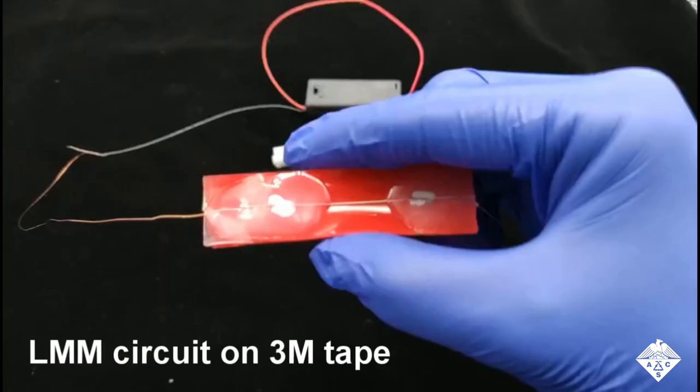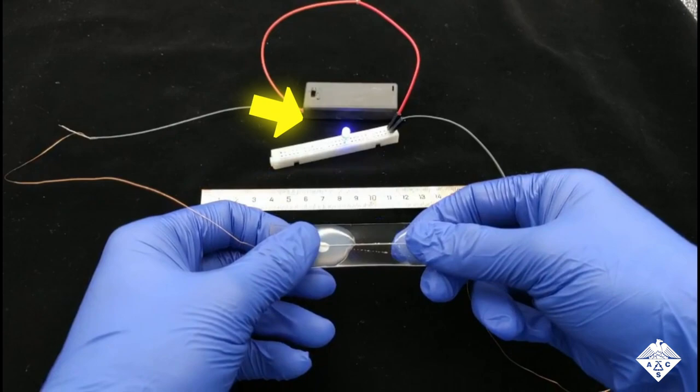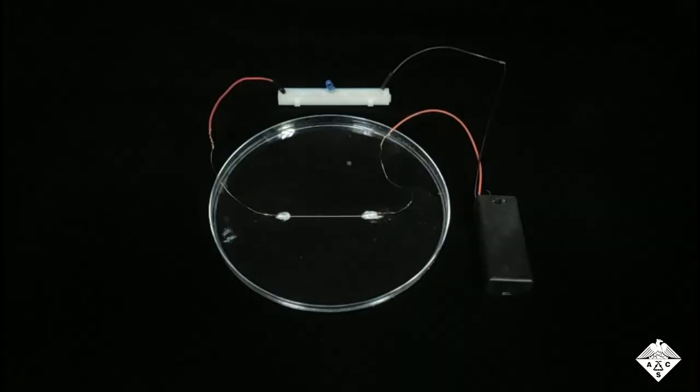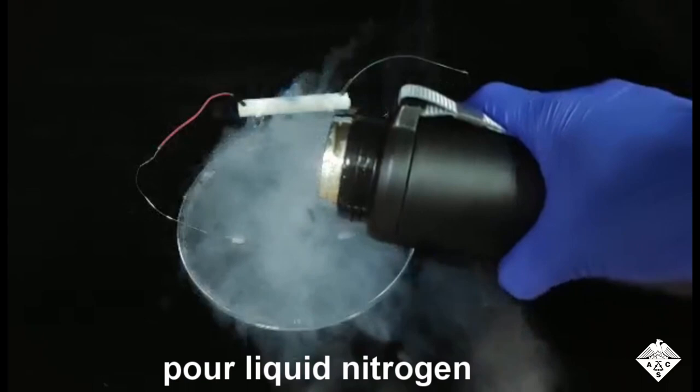The printed ink wasn't conductive at first, but the researchers activated it by stretching. As the circuit became active, it lit up an LED. The circuit was flexible enough to remain conductive after being stretched and released repeatedly. The team could also activate the ink by pressing it or freezing it. All of these treatments ruptured the dried alginate networks to connect the liquid metal micro-droplets, making the ink electrically conductive.